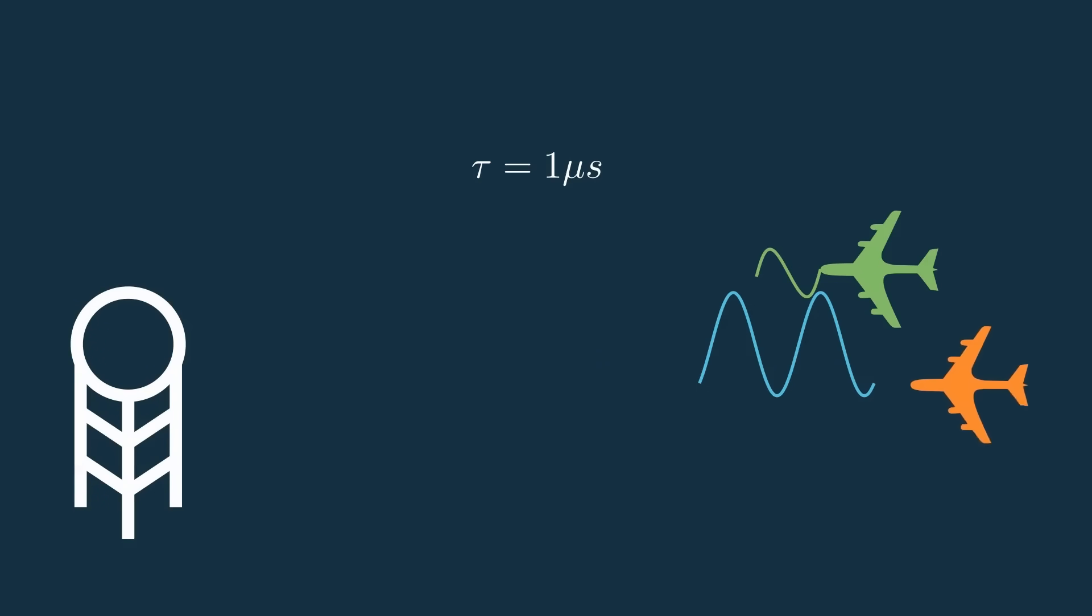The wave travels along until it hits the target and some of it scatters back. But say there's another target here, a little after the first, with the distance between the two being delta R. The transmit wave scatters some energy off that target as well.